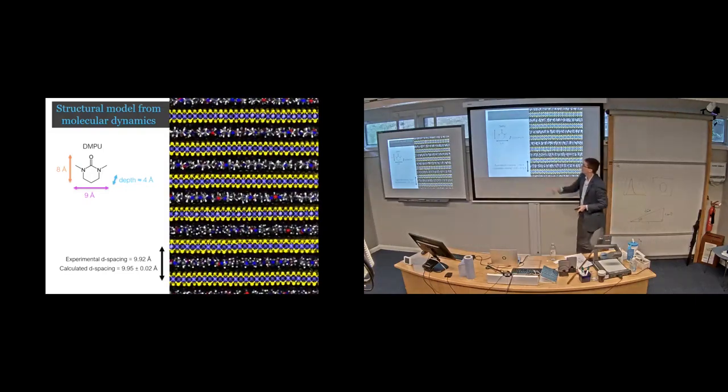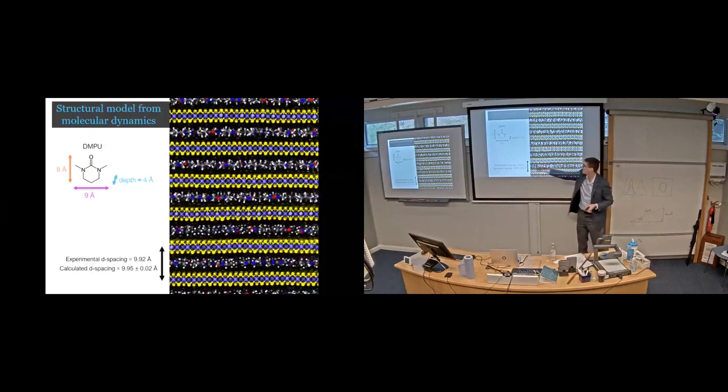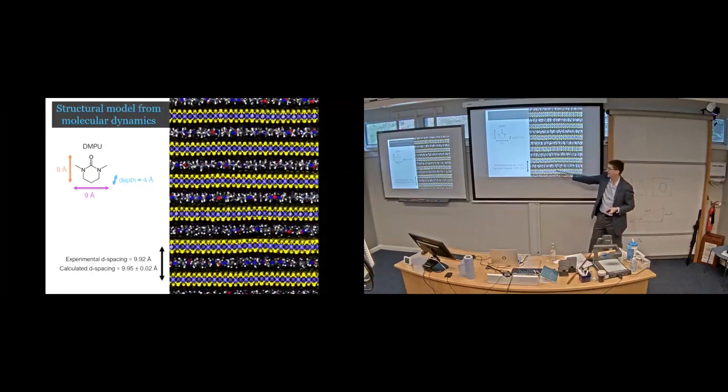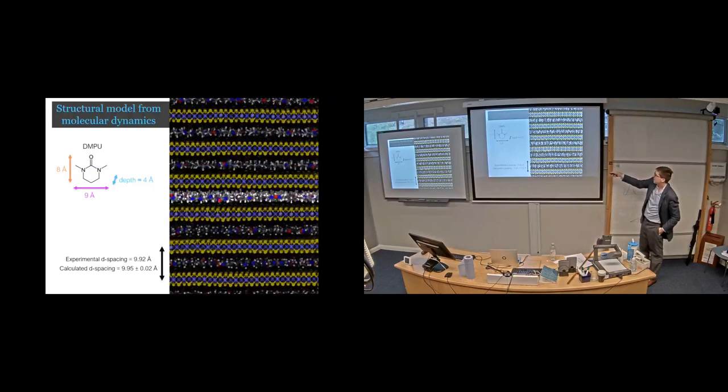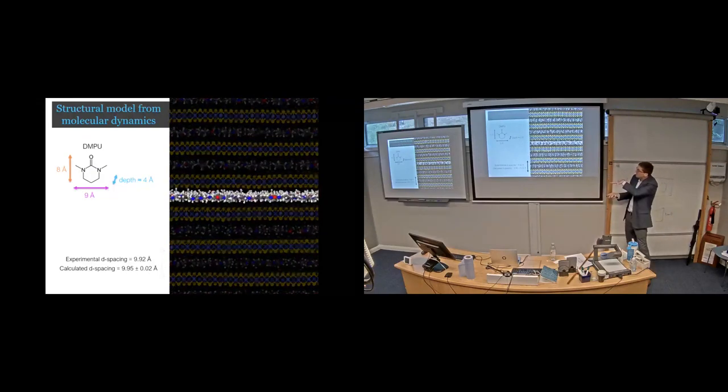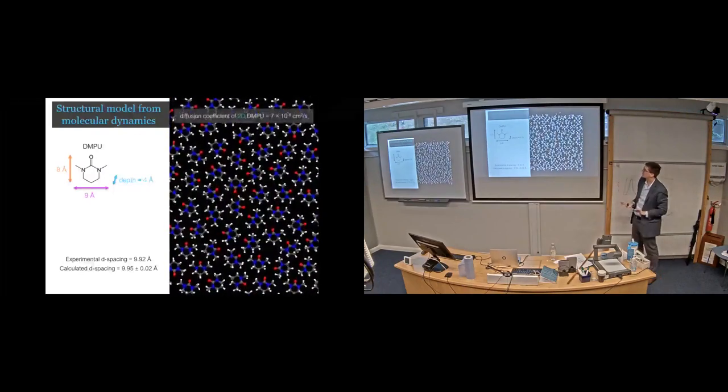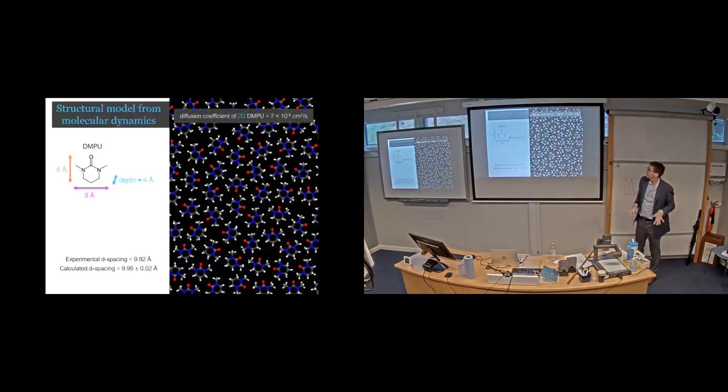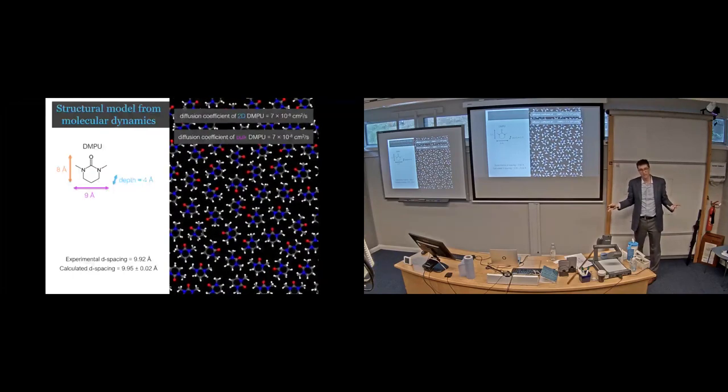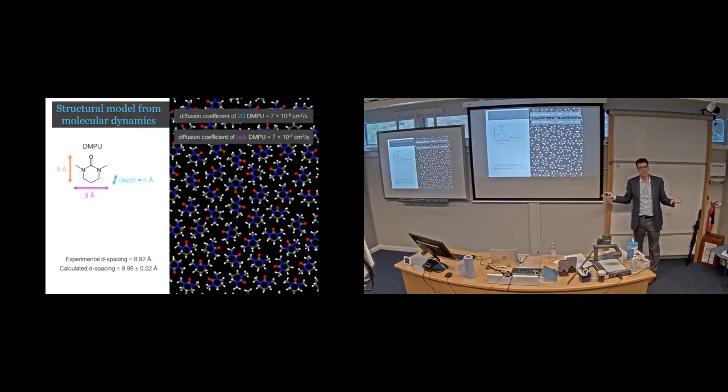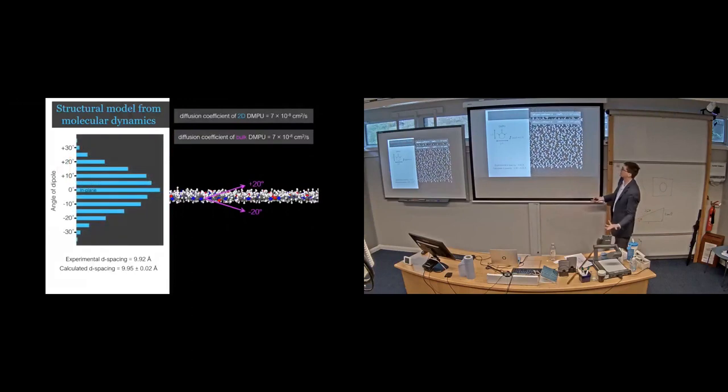This was a really interesting finding because it showed us that our as-made material is structured, it's periodic because it's diffracting. But it's also about three to four angstroms larger of a D spacing than what we were expecting. And so that picture then we developed with molecular dynamics, knowing that the DMPU has a thickness of about four angstroms. So these are MD simulations that we've done. We know that experimentally the D spacing is 9.92. From our MD, we get a calculated D spacing that almost matches that. And so this is showing actually these molecular monolayers moving around, having liquid-like behavior.